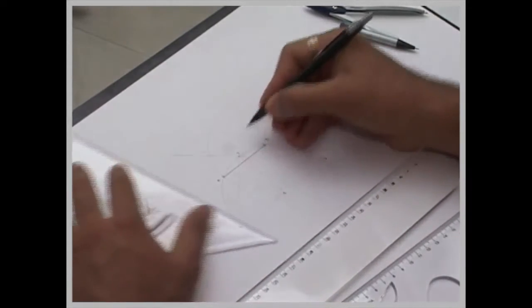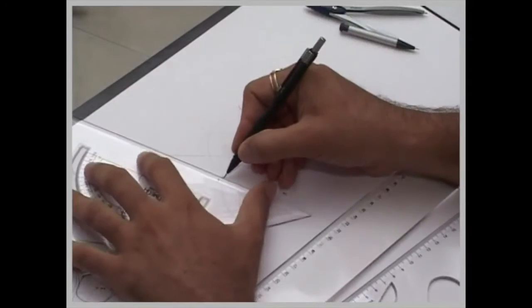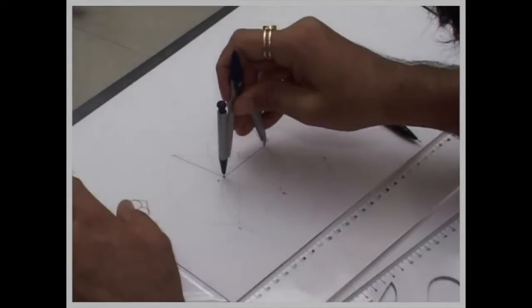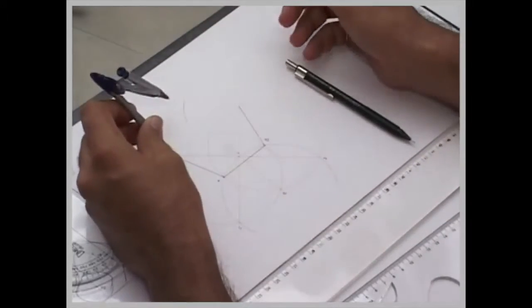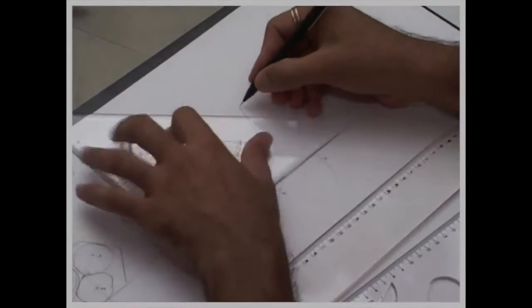This point F. Then you join this side, this side. Take 5 cm in your compass. From here, you cut out this side as well as this side. So we got a pentagon.